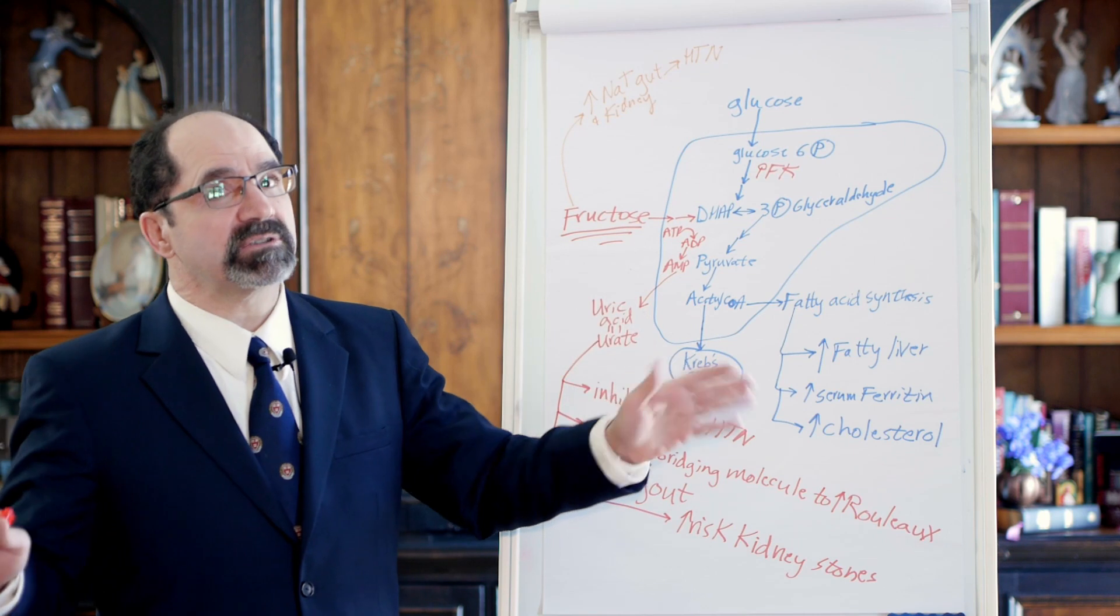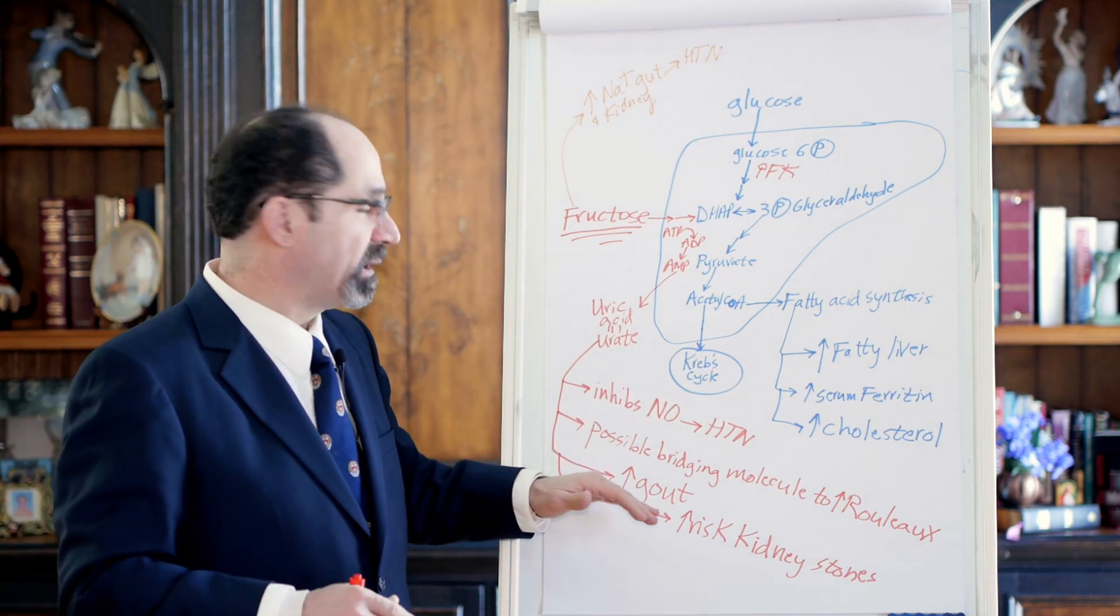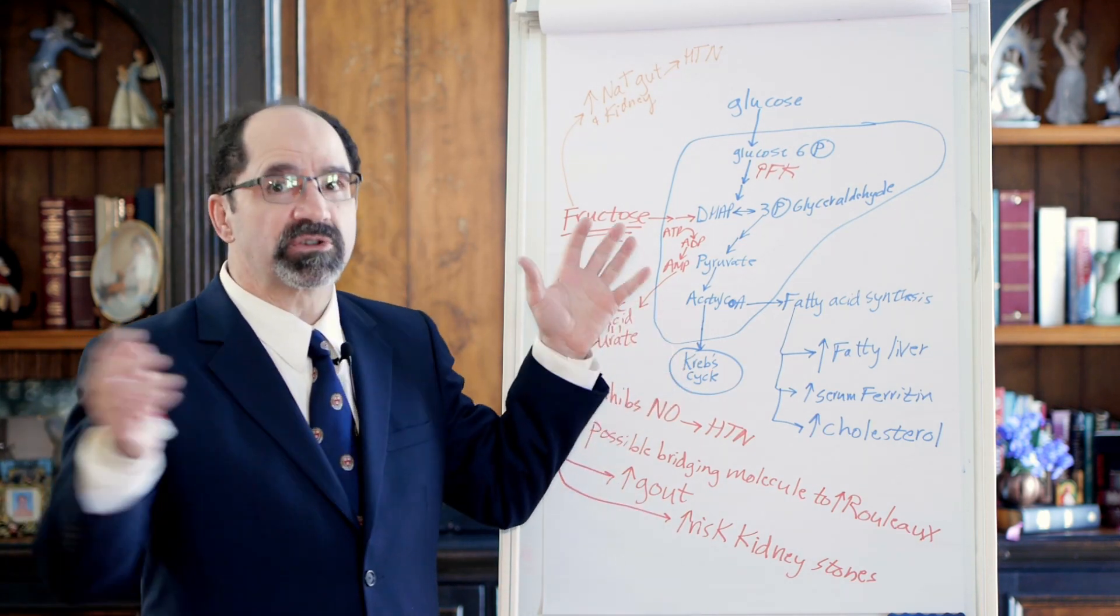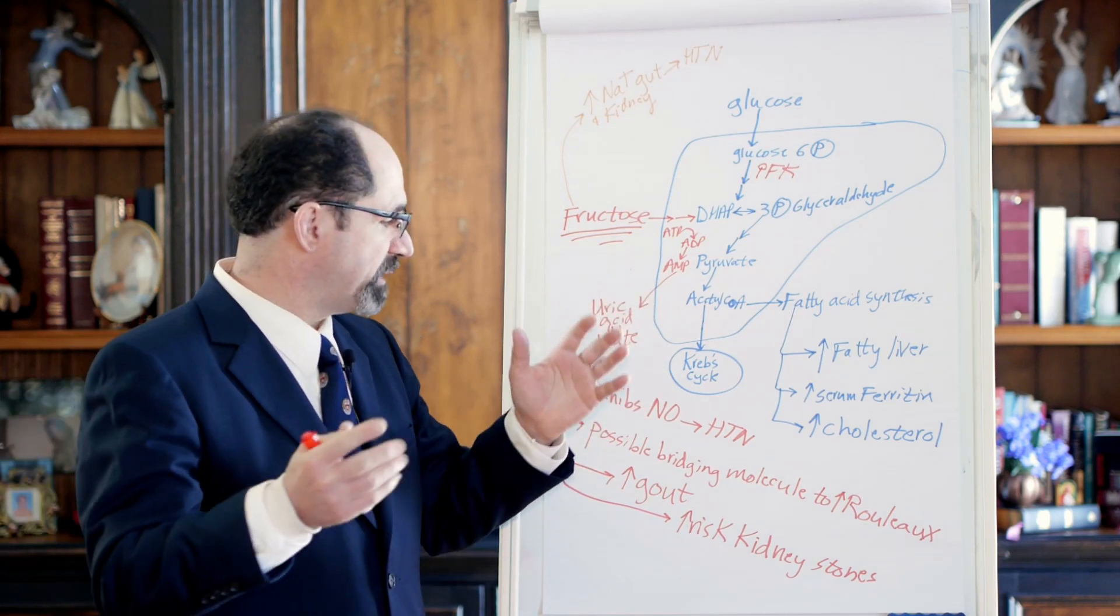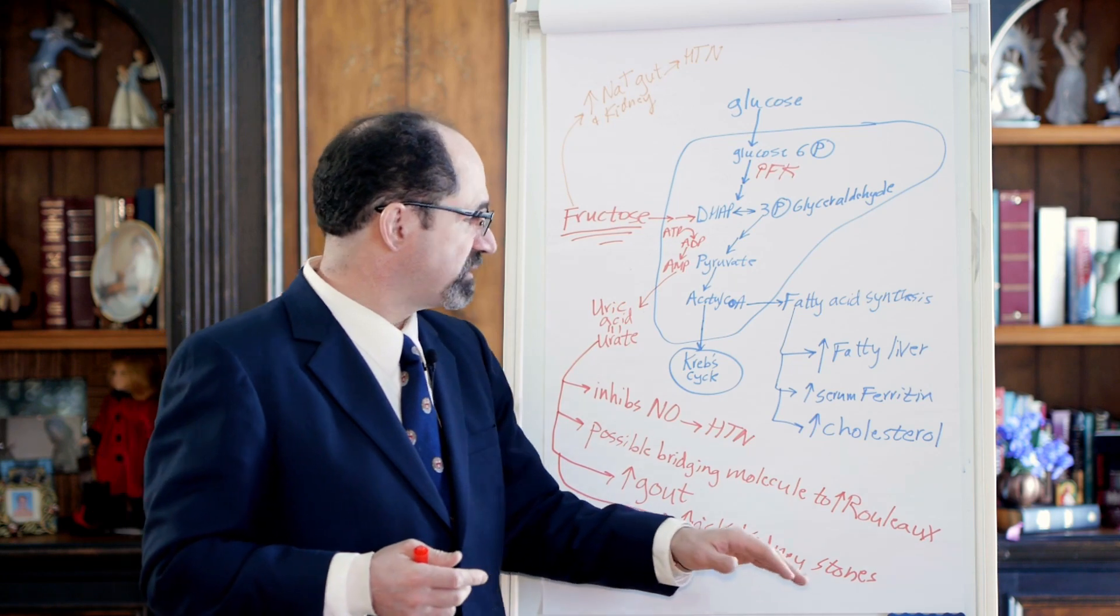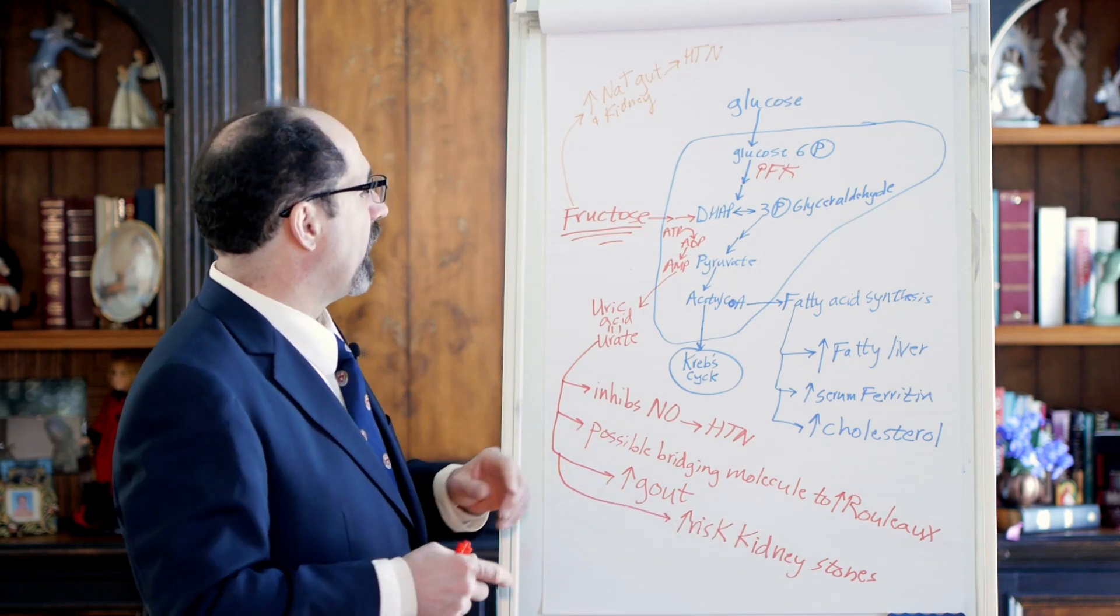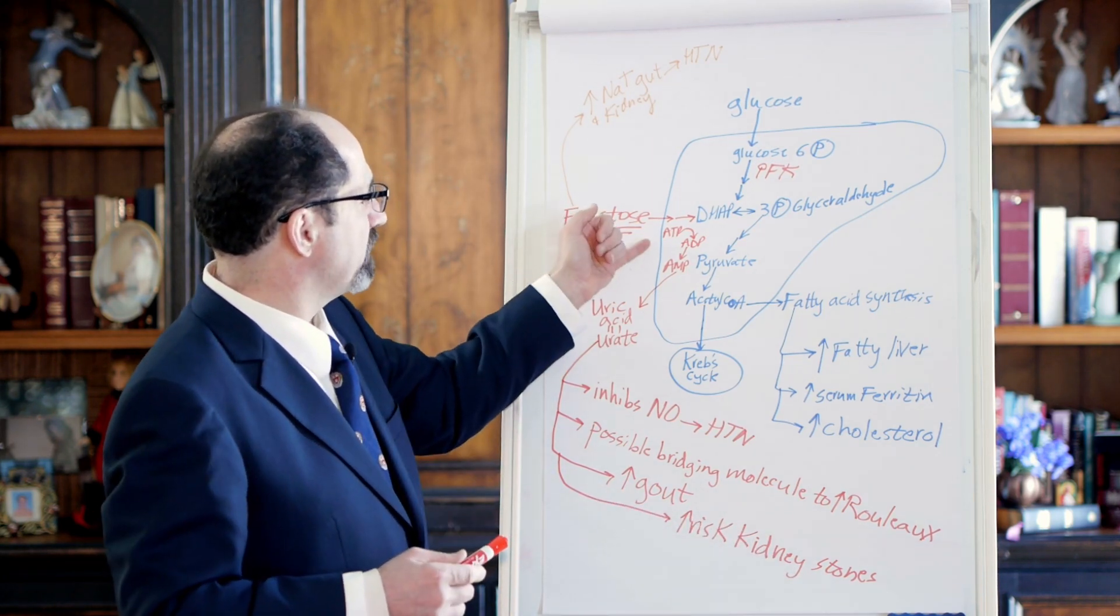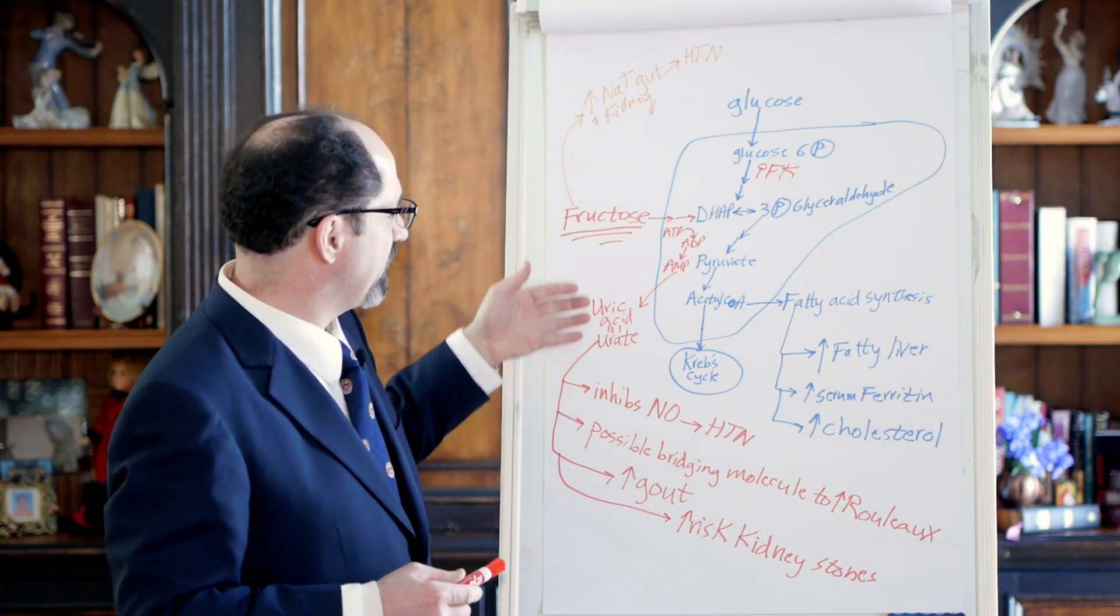But there was no high fructose corn syrup back in those days. And the point I'm saying is gout did exist and there were fat people, much less common than today. There weren't that many people wealthy enough to eat that way. Okay, and it's much worse now that fructose is so omnipresent. In addition, the uric acid puts a little bit of an increased risk of kidney stones in and of itself.